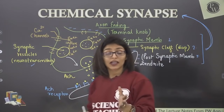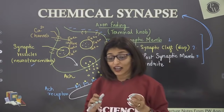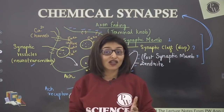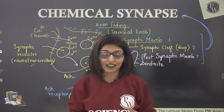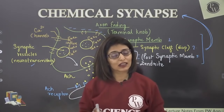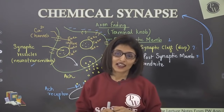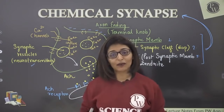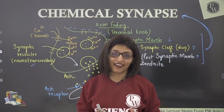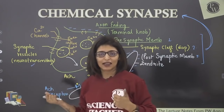Endorphins are released, for example, when eating sweet things — that's why sweet things feel good even if they are unhealthy. Karela may be very healthy, but it doesn't cause endorphin release! That's the connection between neurotransmitters and our feelings.